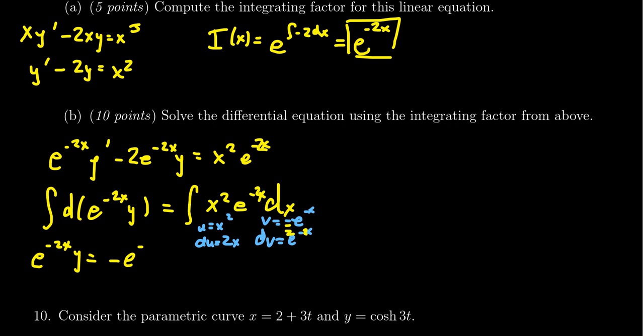Let me fix that on screen — putting the 2s back. There should be a 2 here, a 2 here, and dividing by 2. So the corrected first term from integration by parts is negative one-half x squared e to the negative 2x.